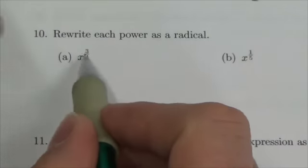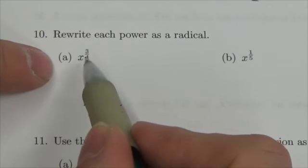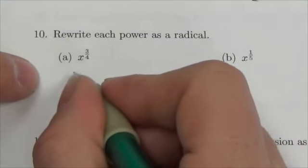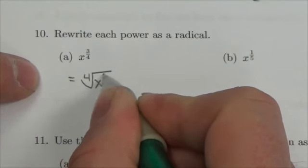So when we take a look at this power here, we've got a rational exponent. Remember that the numerator continues to be the power on the x, but the denominator is the root index of the corresponding radical. So this is going to be the fourth root of x cubed.